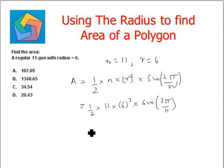Half times 11 times 6 squared times sine of 2 pi by 11. And when we solve this whole expression using our calculator, we get the answer as 107.05. This is the area and can be seen in option A.